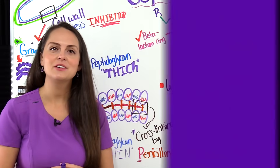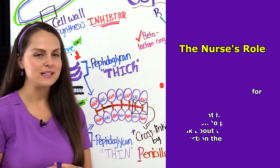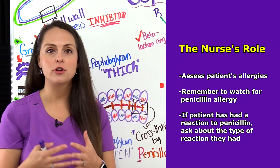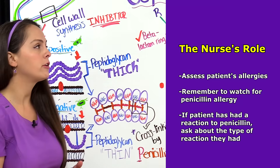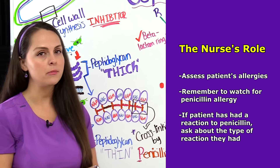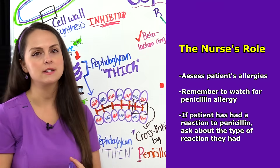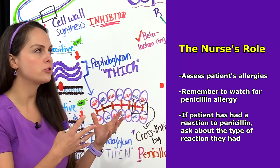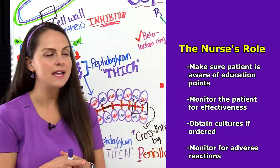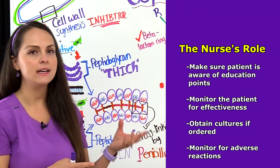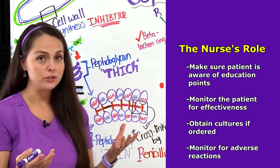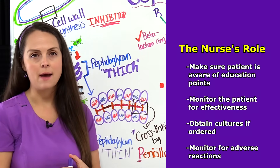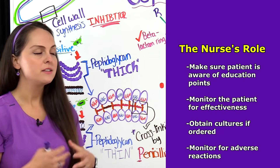Now let's talk about our role as a nurse when administering these antibiotics. Before we even give the antibiotics, we need to make sure our patient is not allergic to them, and also check that they're not allergic to penicillin because remember there's a cross-sensitivity risk. While the patient's taking them, make sure they're aware of important education points, that they're actually getting better, and you want to monitor for those adverse reactions that can happen with this antibiotic group.